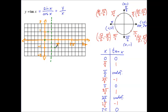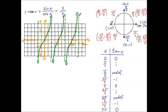Moving on to 3 pi over 4, we got -1. At 5 pi over 4, we got 1, and then another asymptote at 3 pi over 2. At 7 pi over 4 we got -1, and at 2 pi we got 0. Continuing, there would be another point at 9 pi over 4 and another asymptote at 5 pi over 2. Recalling from rational functions, near an asymptote the graph gets closer and closer without reaching it. Here is our graph for the tangent function.